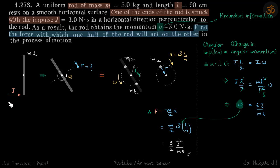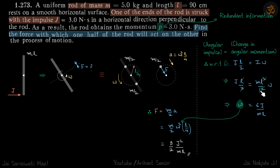The angular impulse is R vector cross J vector. In our case, R is L/2, so angular impulse equals J times L/2, directed out of the plane. This equals the change in angular momentum, which is I·omega. The moment of inertia about the center of mass is ML²/12. From J·(L/2) = (ML²/12)·ω, we get the value of omega, which we substitute back to find F.